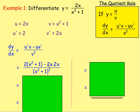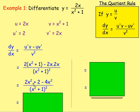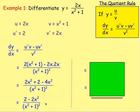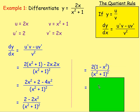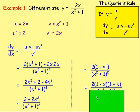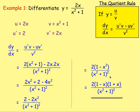From there, multiply out the brackets on the top: 2x² + 2 take away 4x². We've got 2x² take away 4x², so we can rewrite that as 2 take away 2x². The rule is to leave your answer in factorised form, so factorising the top, we take out 2 as a common factor: 2(1 − x²) over (x² + 1) all squared. And if you look at that, it's difference of two squares — 1 is 1², x² is x² — so we can write that as 2(1 − x)(1 + x) over (x² + 1) all squared. That is your answer.